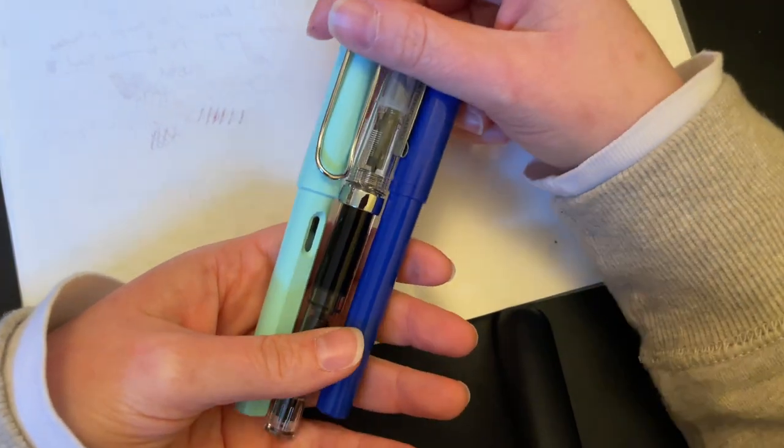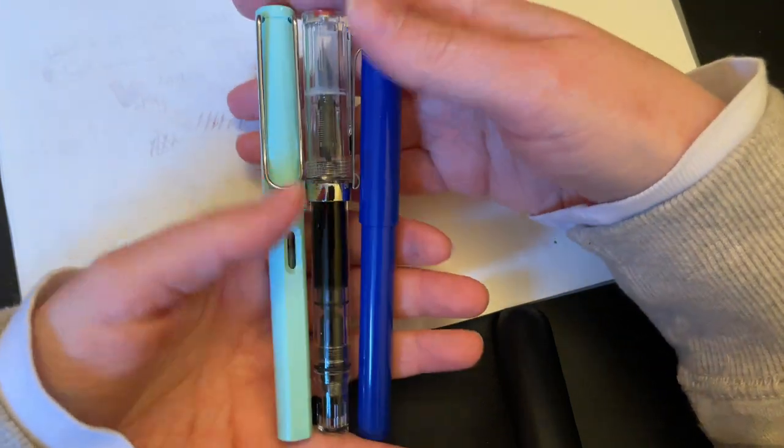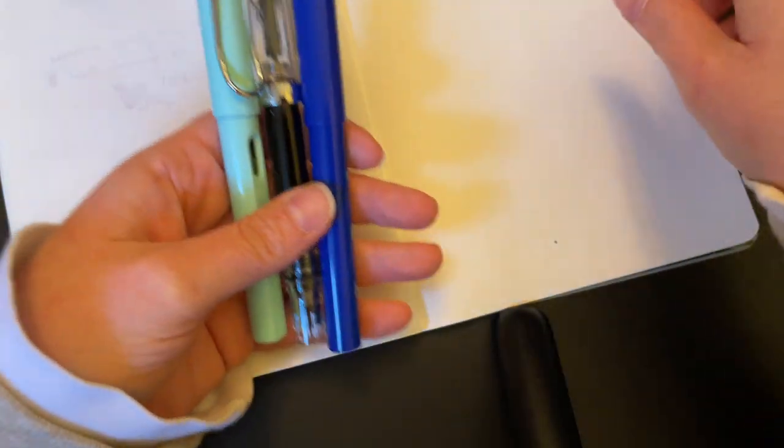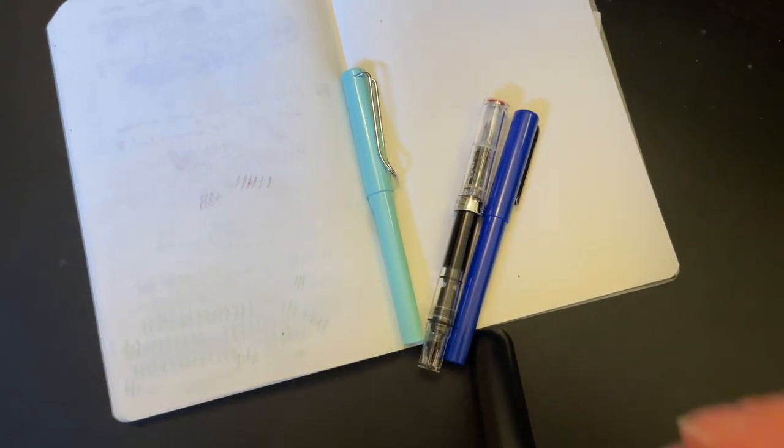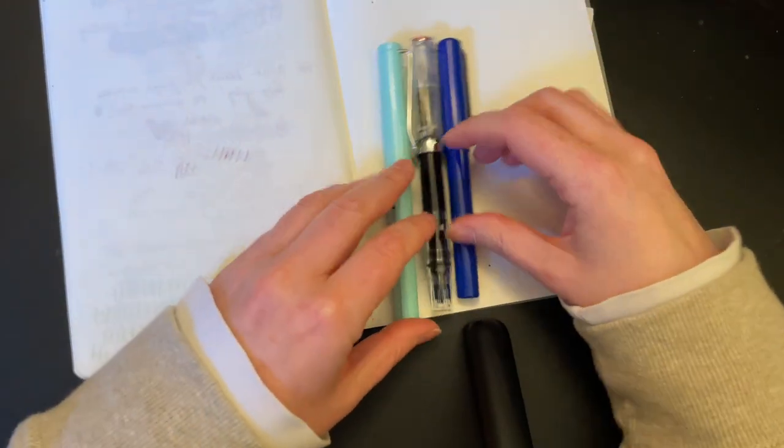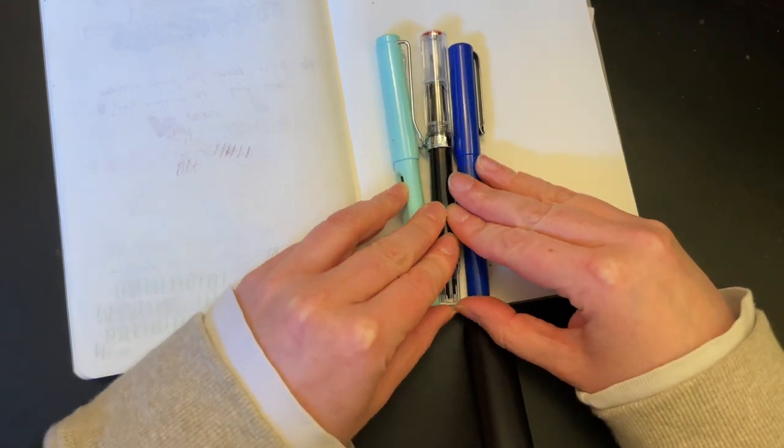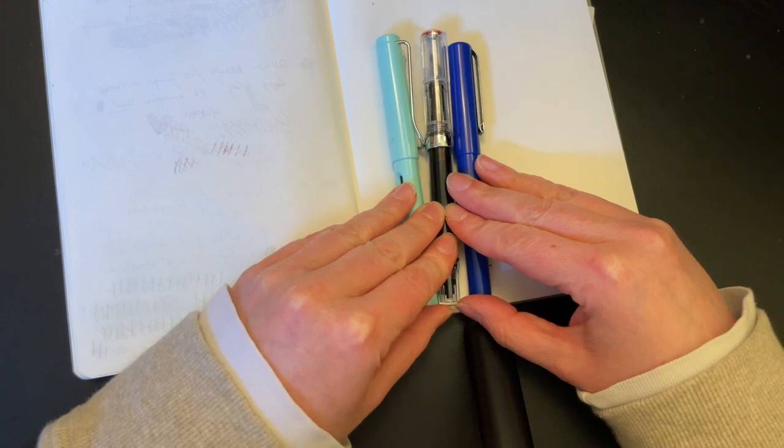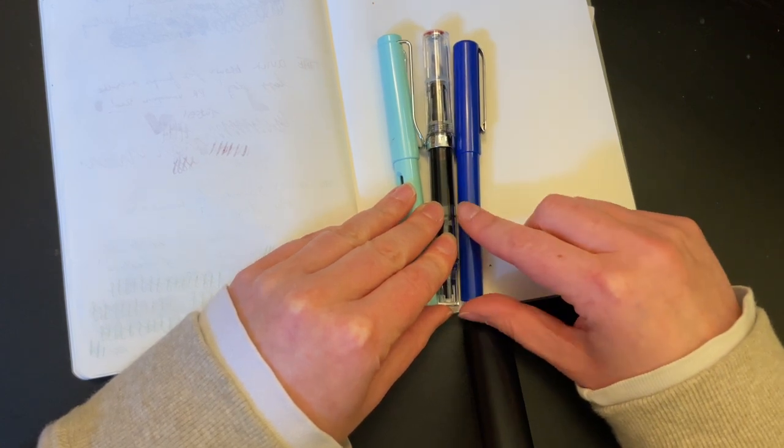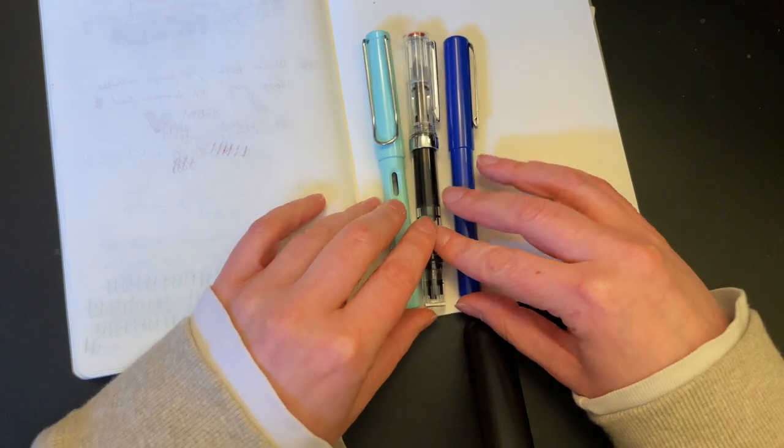The overall size of all three pens is actually pretty similar. The Eco-T probably takes the cake by a hair over the Lamy Safari. The Student is definitely the shortest, but they're all pretty darn close.